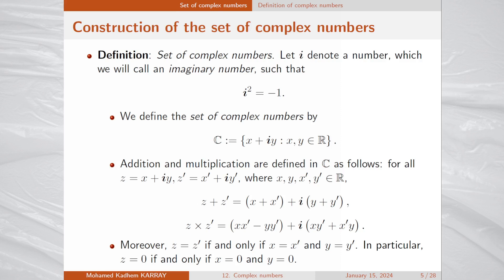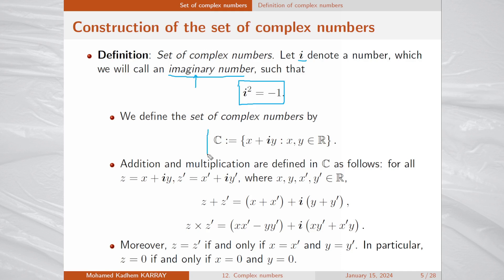Here is the mathematical construction of the set of complex numbers. Let i denote a number called imaginary number such that i squared equals minus 1. So this number is not real — it is imaginary. Then we define the set of complex numbers, denoted C, as the set of x plus iy where x and y are real numbers.